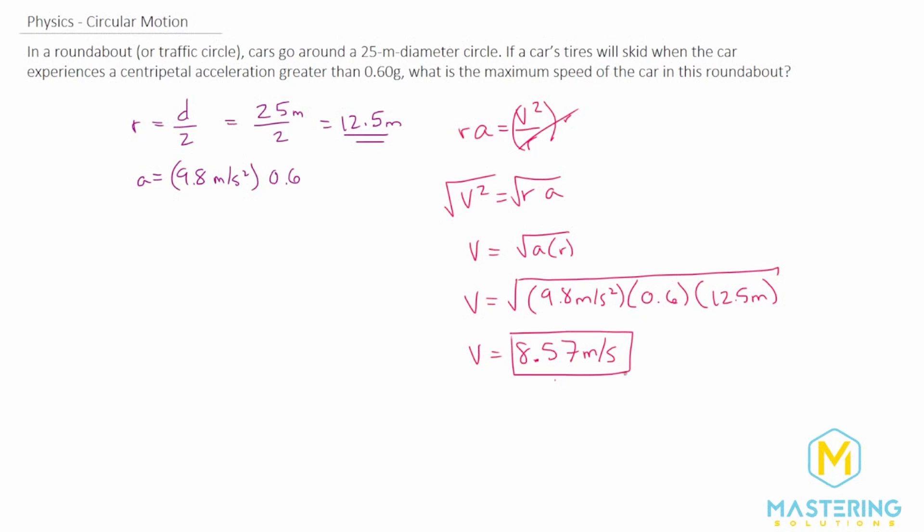So I'm sure they've caught it. This is the correct answer: 8.57 meters per second for the maximum speed that the car can go in this roundabout without skidding.